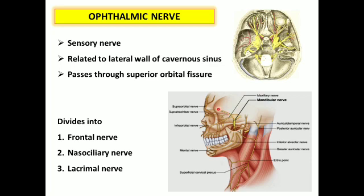The ophthalmic nerve is a purely sensory nerve and does not contain motor fibers. Initially it is related to the lateral wall of the cavernous sinus and enters the orbit through the superior orbital fissure. After passing through the superior orbital fissure, it divides into three branches: the frontal nerve, the nasociliary nerve, and the lacrimal nerve.